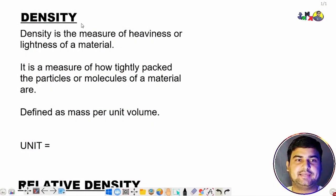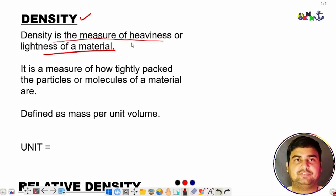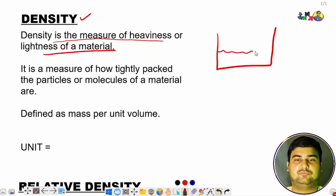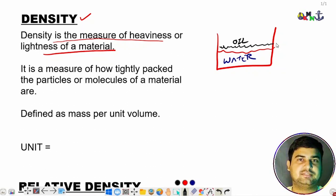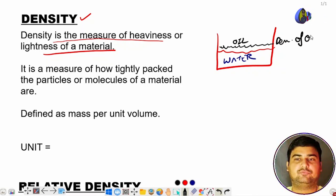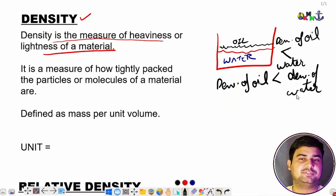In this video we will learn about density and relative density — two important topics to start with in stability. Density, as learned in physics, is the measure of heaviness or lightness of a material. To understand this, consider a jar filled with water into which we pour some oil. Oil floats on the surface of water because the density of oil is less than that of water.